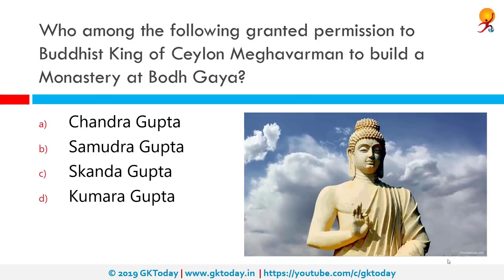Who among the following granted permission to Buddhist king of Ceylon, Meghavarna, to build a monastery at Bodh Gaya? That was Samudragupta. He granted this permission to Meghavarna and thus earned the name Anukampabhavan, meaning full of compassion.